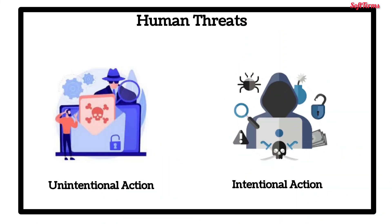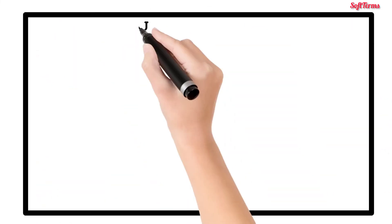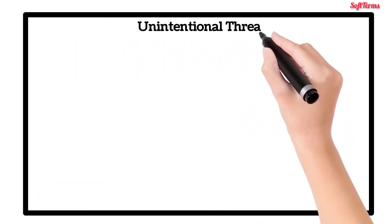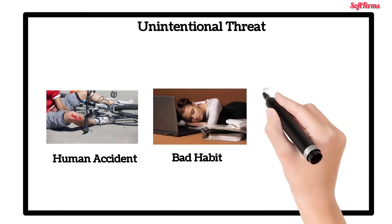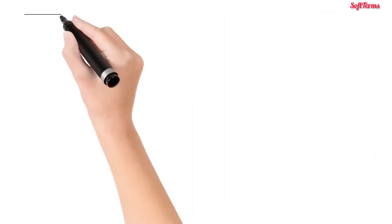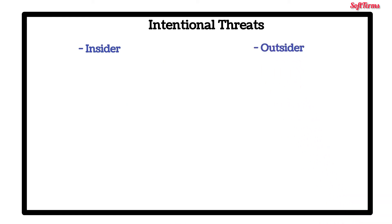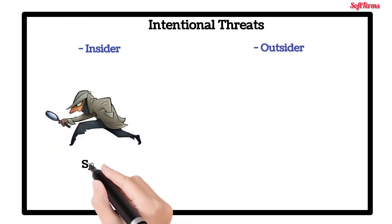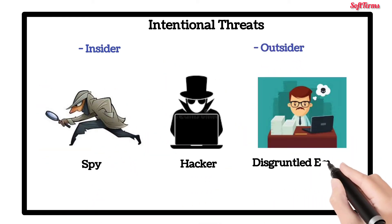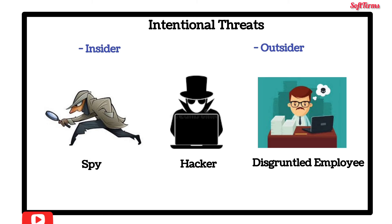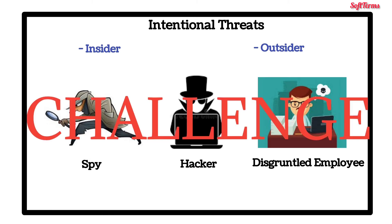Human threats are caused through unintentional or intentional actions. An unintentional threat is a human accident, bad habit, or carelessness. An intentional threat, whether caused by an insider or outsider, can be a spy, hacker, or disgruntled employee. The insider intentional threat is one of the most challenging security problems because insiders have working knowledge and access to the organization's network.